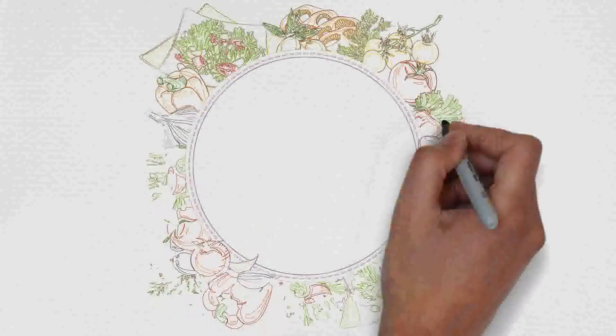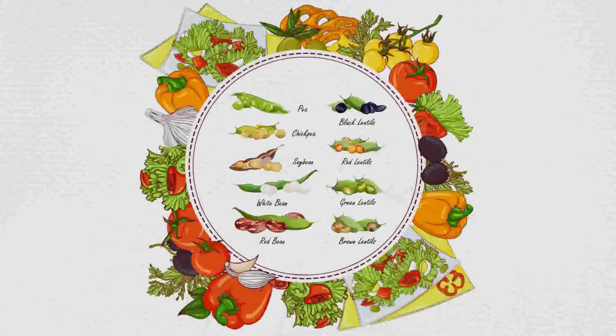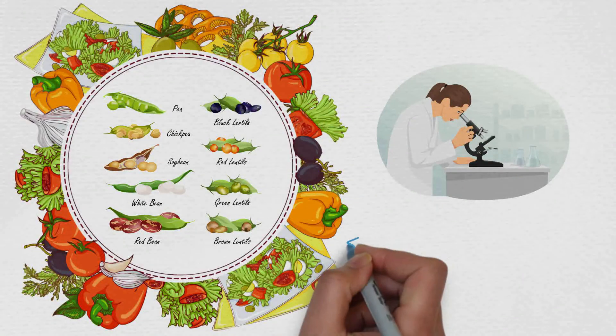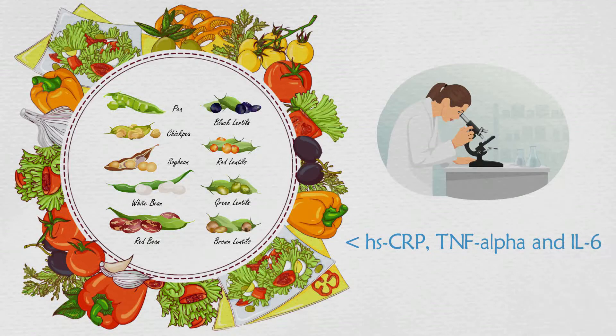There are many foods that may reduce inflammation, but legumes may be one of the most effective ones. This research showed that legume intake in women reduced hs-CRP, TNF-alpha, and IL-6, all of which are inflammatory compounds.